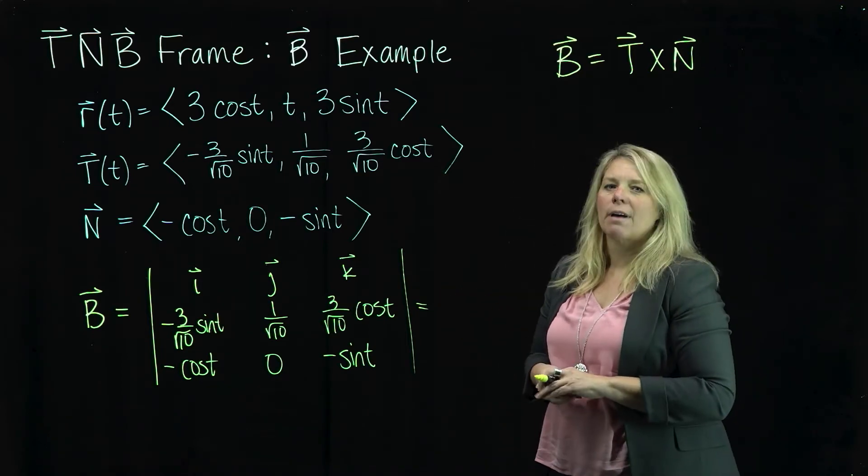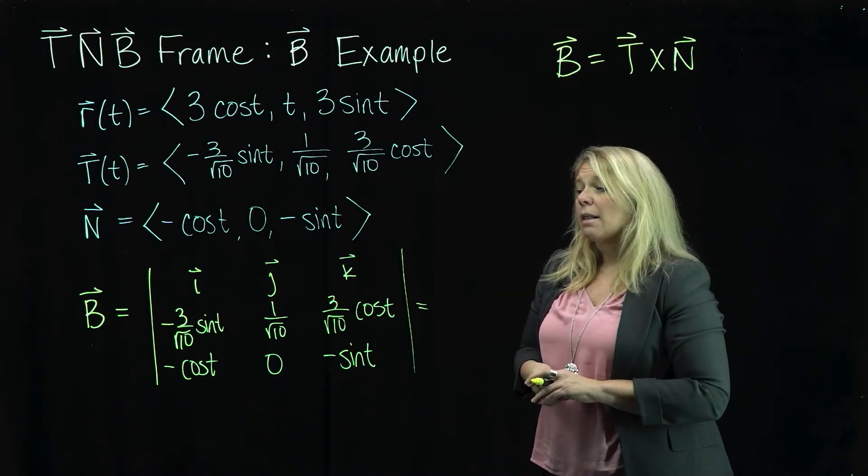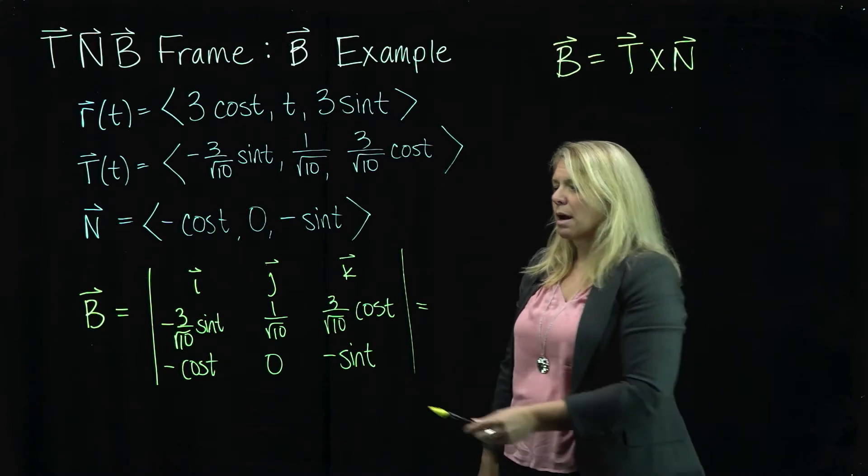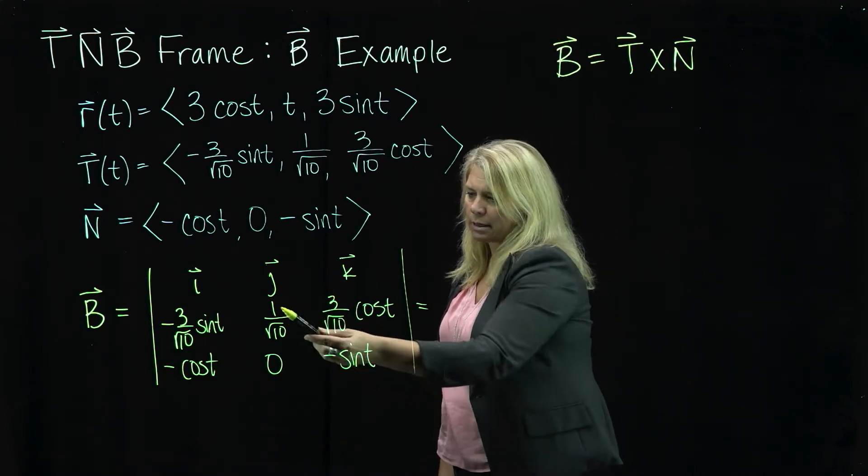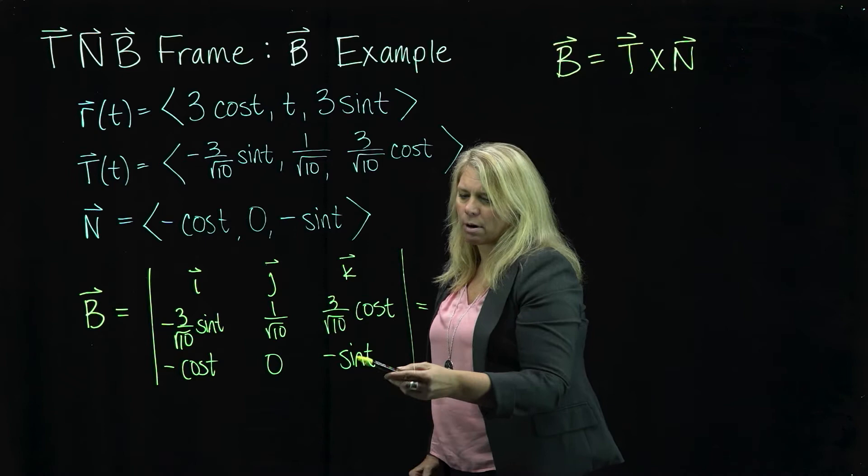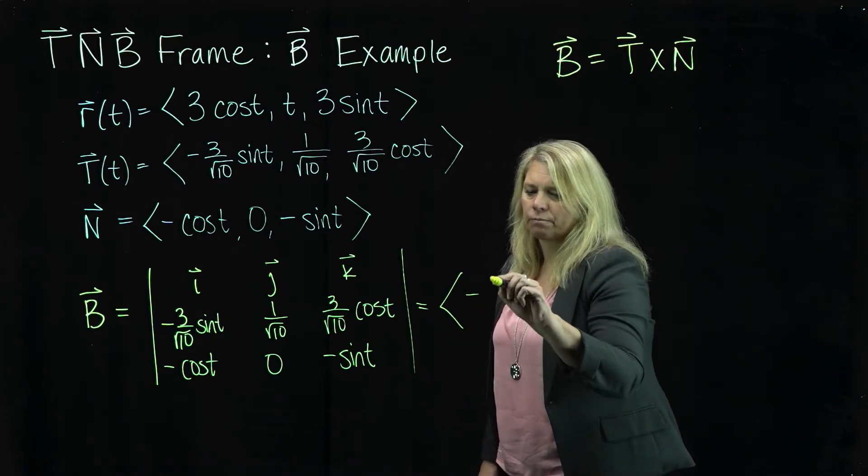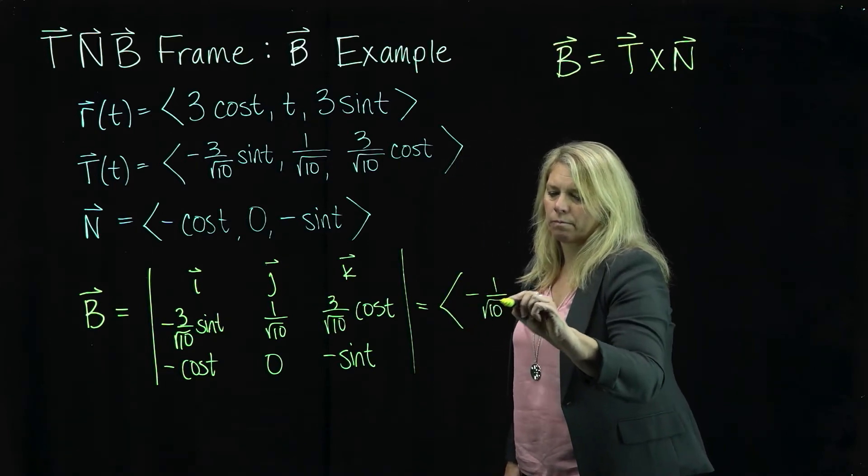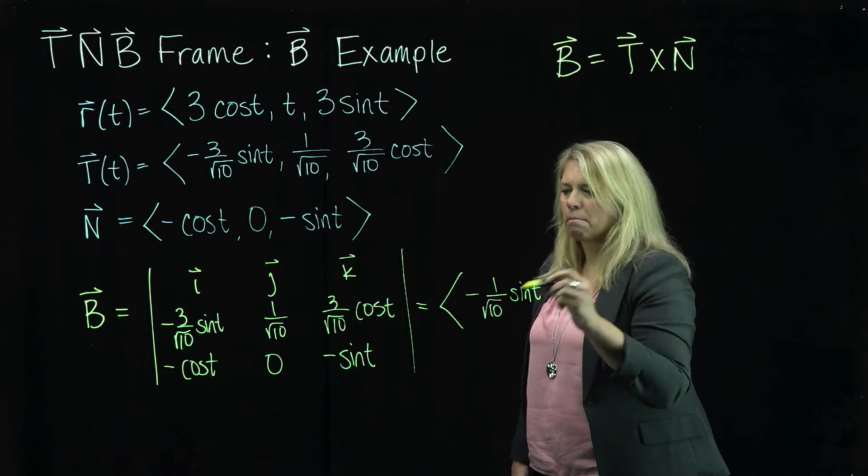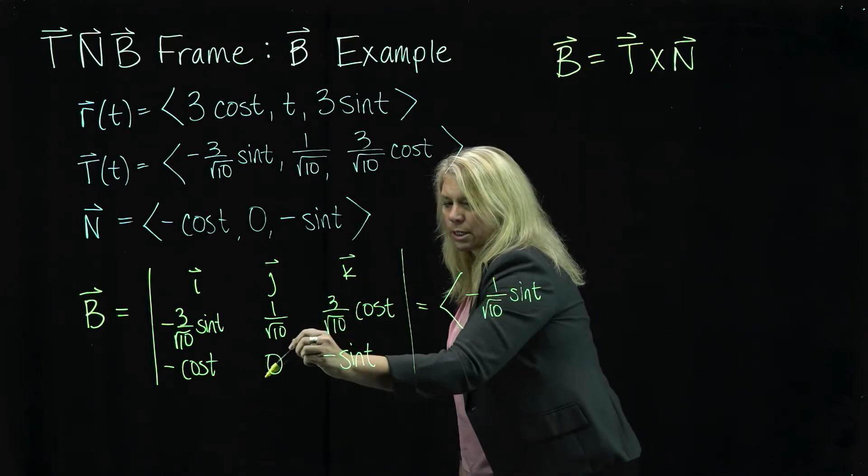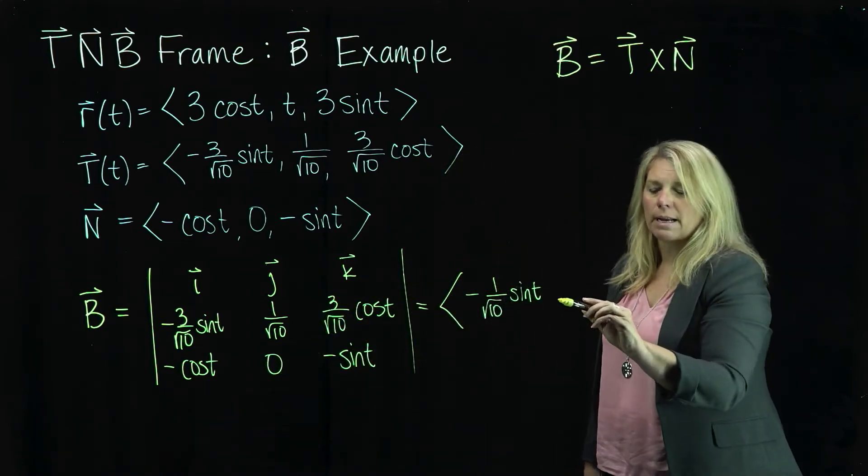All right. So I'm going to just simplify as I go here. In the I component of my cross product, I will have this product. So negative 1 over square root 10 sine T minus this product, which is zero. So I don't need to write that.